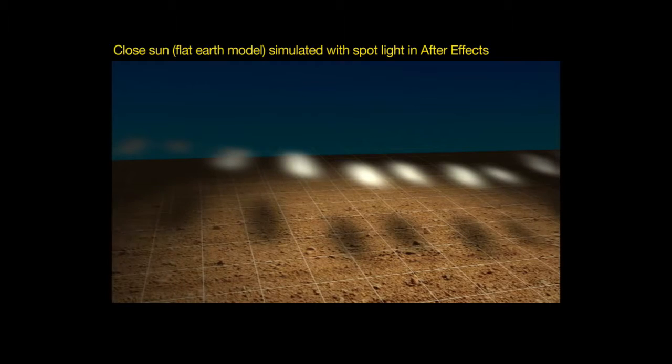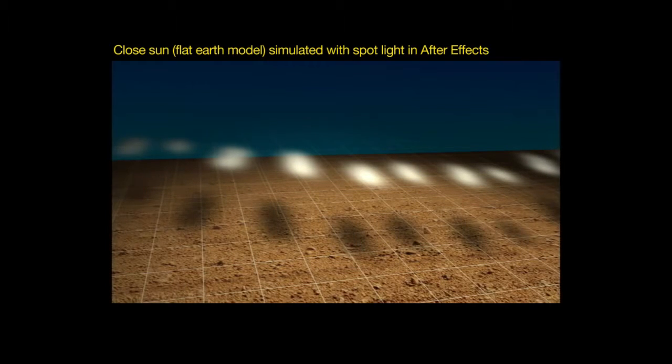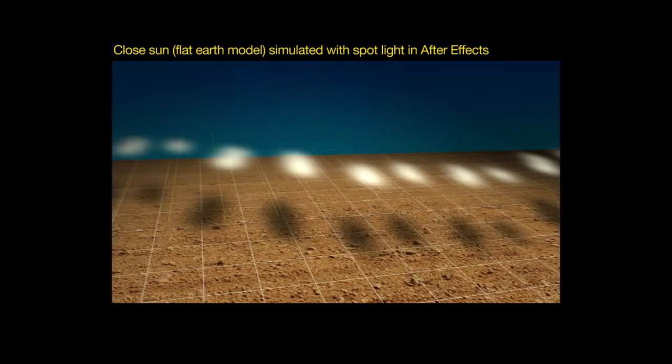Watch what happens as I slowly raise it. As you can see, when the sun gets higher, the shadows of the clouds seem to slowly converge. So let's see what happens when I switch the light to one that's more like the sun as it's been explained to us.